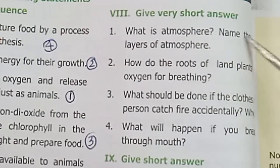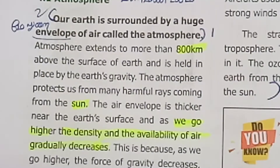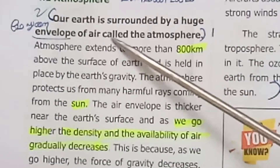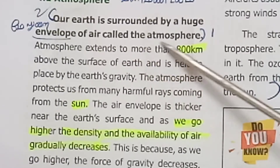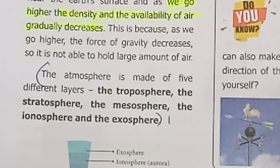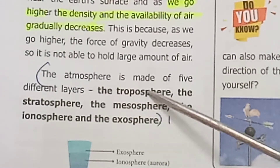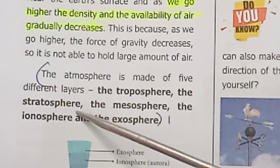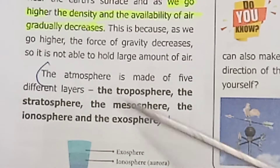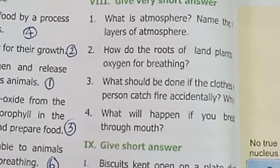Question 8: what is atmosphere? Name the layers of atmosphere. Our Earth is surrounded by a huge envelope of air called the atmosphere. The atmosphere is made up of five different layers: Troposphere, Stratosphere, Mesosphere, Thermosphere, and Exosphere.